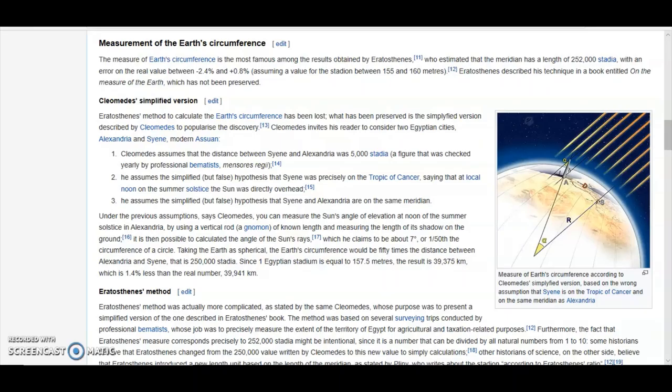I don't think he even existed. Cleomedes assumes that the distance between Syene and Alexandria was 5000 stadia. He assumes the simplified but false hypothesis that Syene was precisely on the Tropic of Cancer, saying that at local noon on the summer solstice the sun was directly overhead. He assumes the simplified but false hypothesis that Syene and Alexandria are on the same meridian.